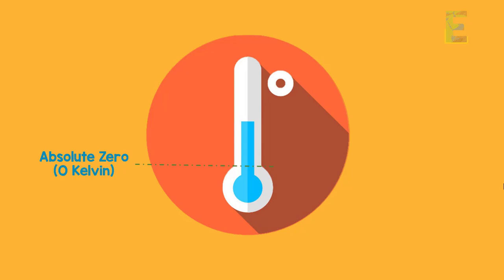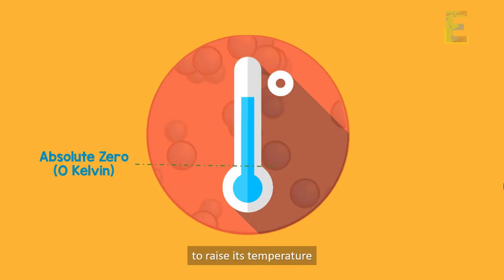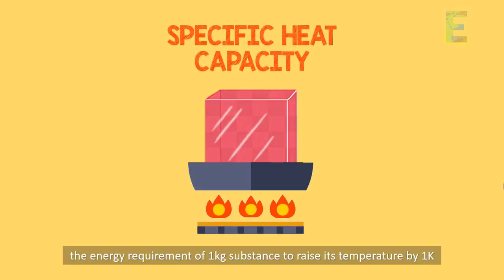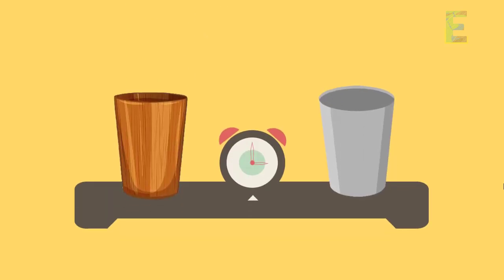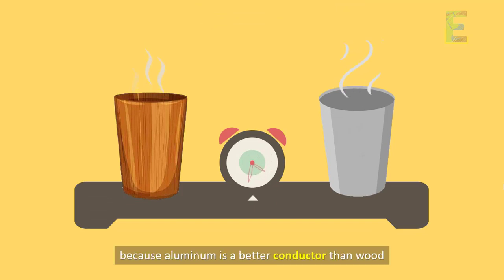It also indicates that a material or substance requires a certain amount of energy to raise its temperature. This is called specific heat capacity — the energy requirement of one kilogram of a substance to raise its temperature by one Kelvin. For example, it will take more time to warm a wooden glass than an aluminum glass, because aluminum is a better conductor than wood.